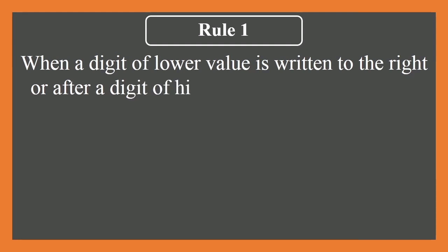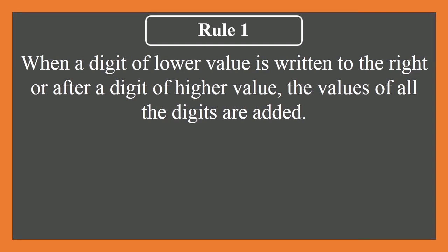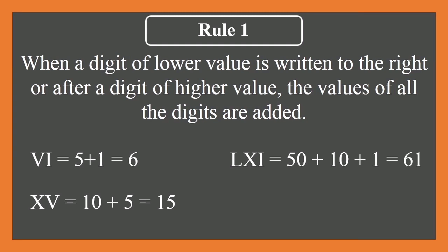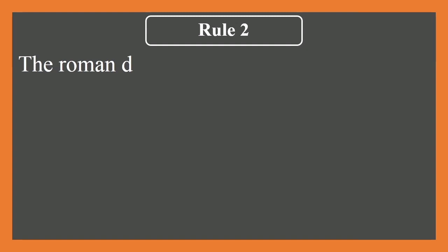But how to write the numbers by just using the seven symbols? There must be some rules. Let us go to the first rule. Rule number one: when a digit of lower value is written to the right or after a digit of higher value, then the values of the digits are added. Let's see with the help of some examples. VI: V means 5 and I means 1, so 5+1=6. XV: X equals 10 and V equals 5, so 10+5=15. LXI: L stands for 50, X is 10, and I is 1, so 50+10+1=61. CL: 100+50=150.